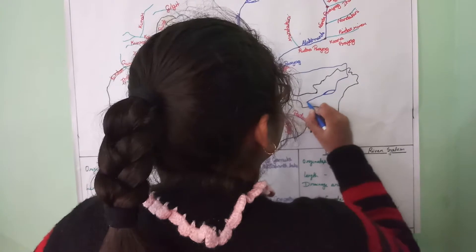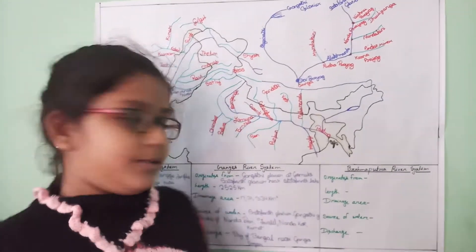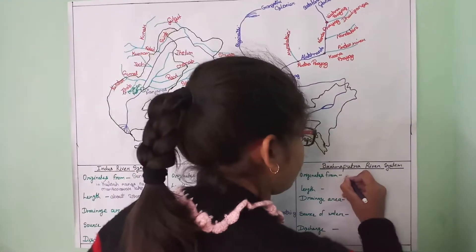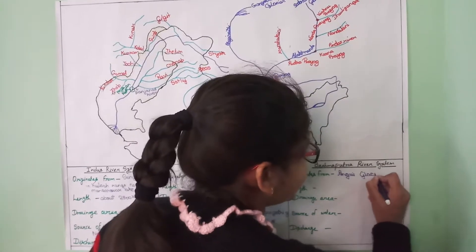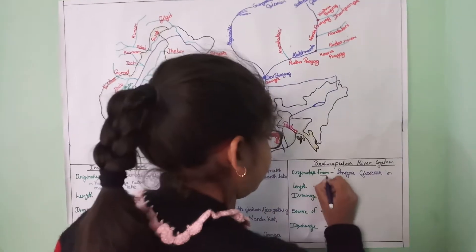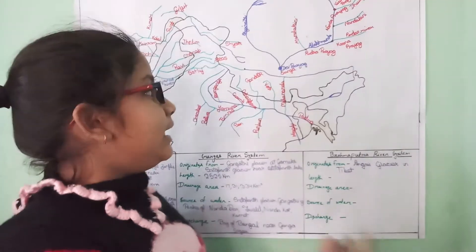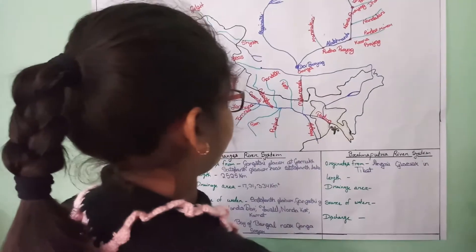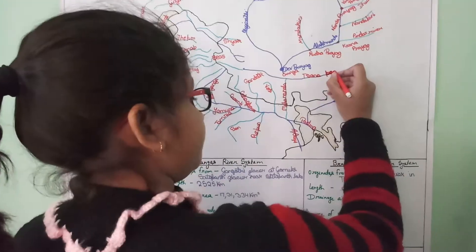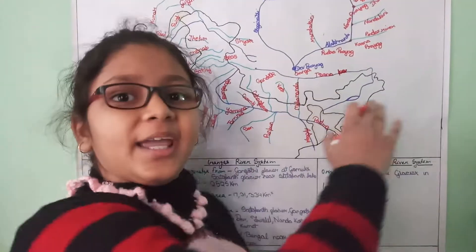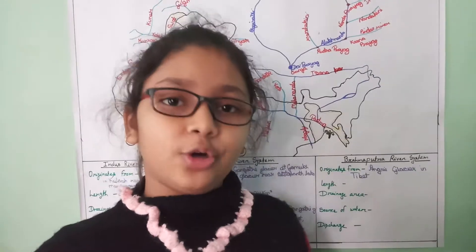It originates from Angshi Glacier in Tibet. When Brahmaputra flows in Tibet it is known as Sangpur. It flows parallel to the Himalayas. Then Brahmaputra enters the state of Arunachal Pradesh in India, where it is known as Dihang.